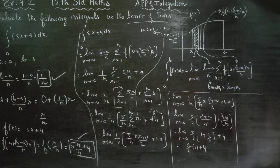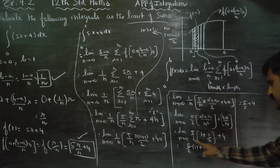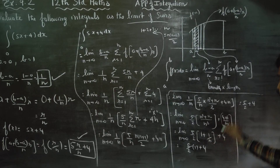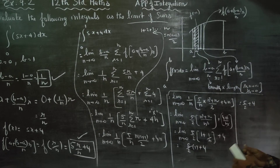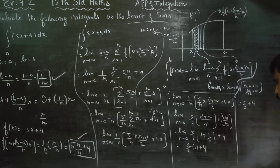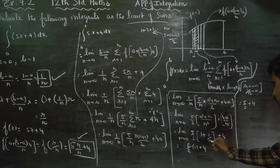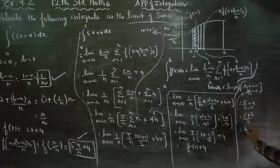When n turns to infinity, 1/n turns to 0, so the answer becomes 5/2 times 1 plus 4. Taking LCM: 5/2 plus 8/2 equals 13/2. Your final answer is 13/2.